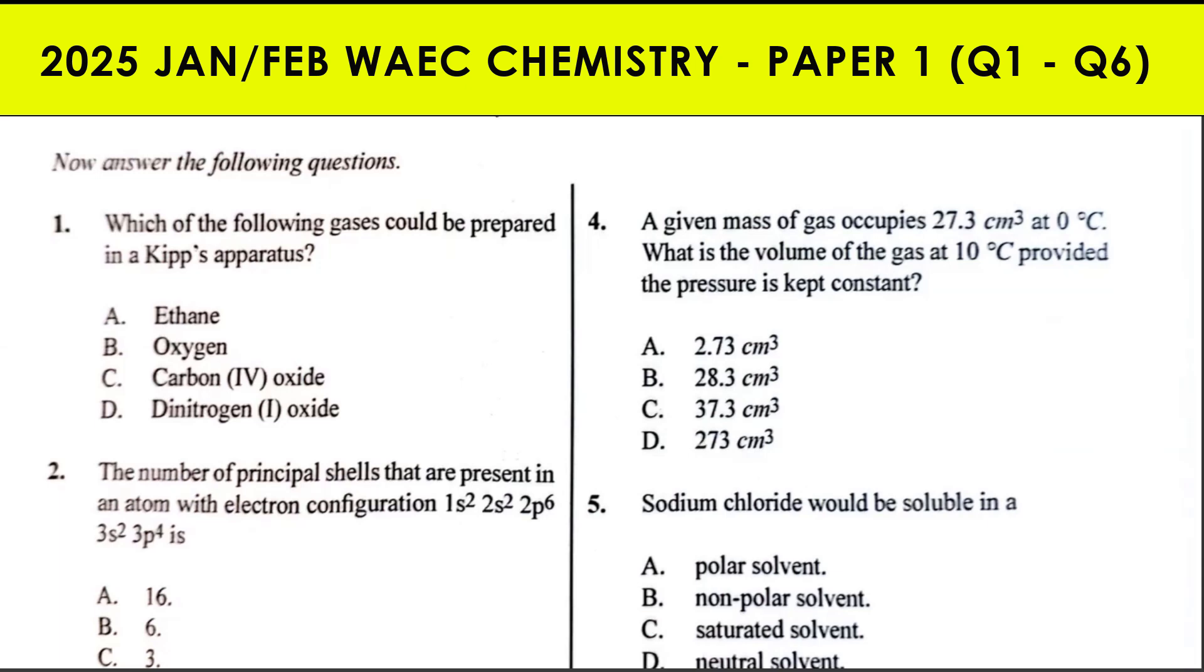Question 1: Which of the following gases could be prepared in Kipp's apparatus? Gases prepared in Kipp's apparatus are carbon dioxide and hydrogen sulfide. They are basically gases that can be prepared using a solid salt and an acid.